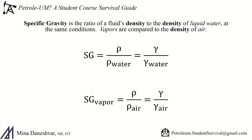Another dimensionless expression related to a fluid's density is specific gravity. This is the ratio of a fluid's density to the density of liquid water at the same conditions. Vapors are compared to the density of air. I use SG to stand for specific gravity, but sometimes you might see small gamma used — just keep this in mind to check whether specific gravity or specific weight is being used.